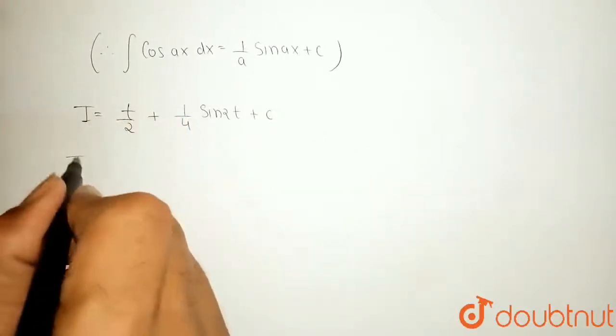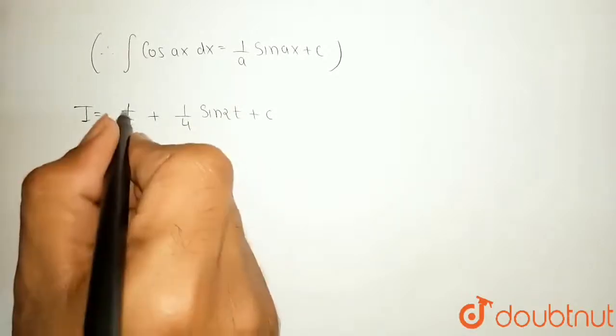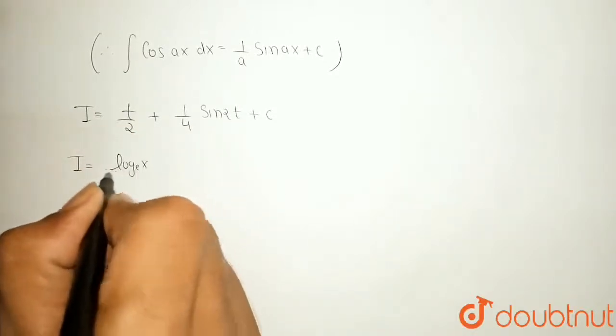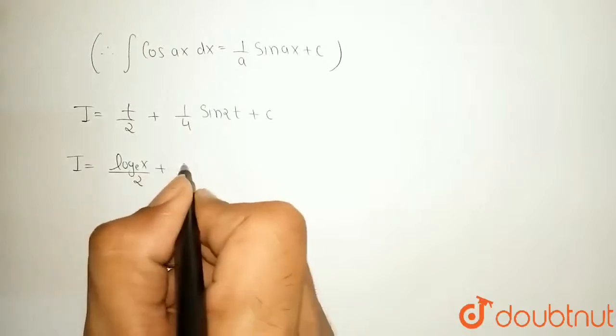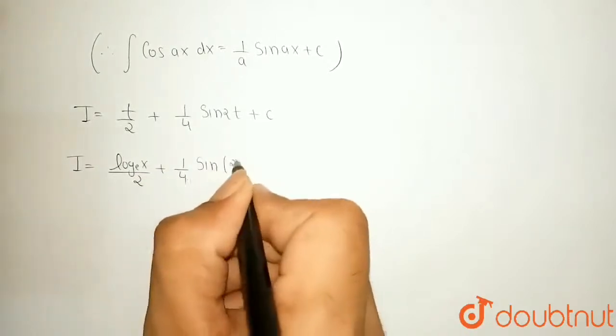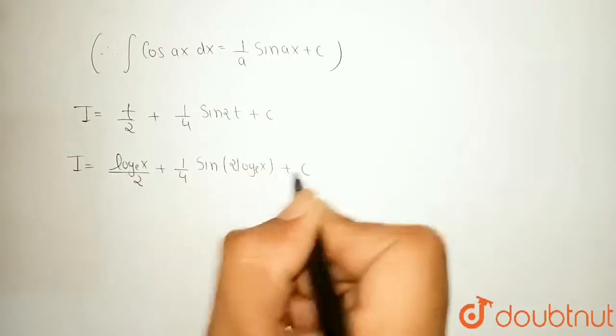And our substitution is log of x. So, I can put t is equal to log of x. So, it becomes log of e base x upon 2 plus 1 upon 4 sin of 2 times log of e base x plus c.